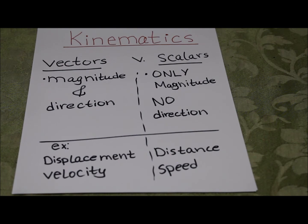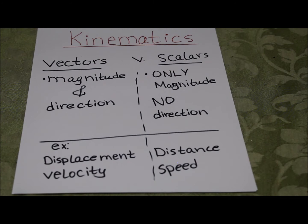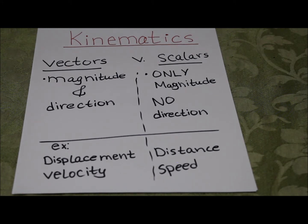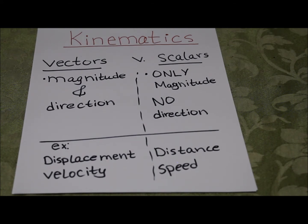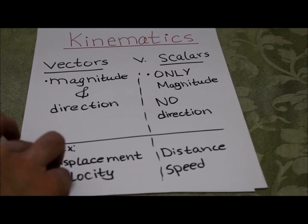Velocity gives you a direction and a magnitude, whereas speed only gives you the magnitude. So if I told you someone is traveling 5 meters per second, you know the speed — you know how fast that person is going — but you don't know if they're going north, east, south, or west. But if I told you that person is going 5 meters per second west, you know exactly how fast and where they're headed.